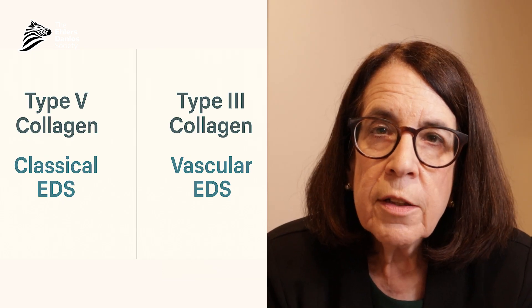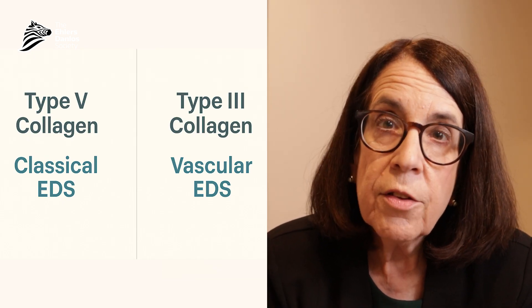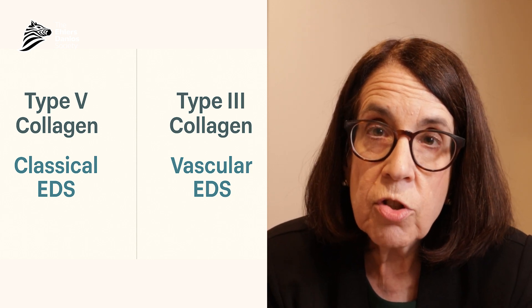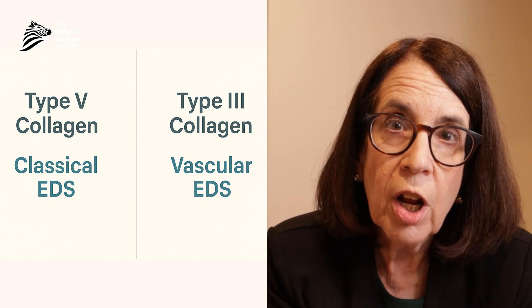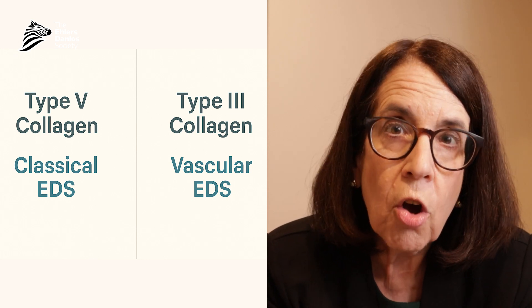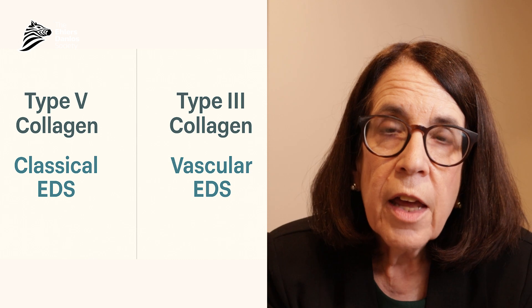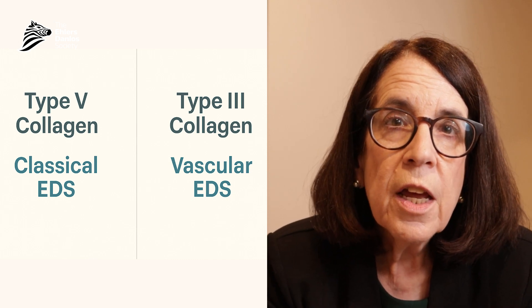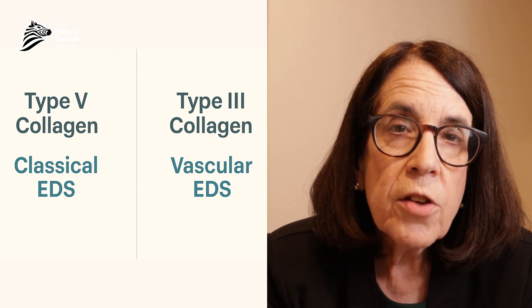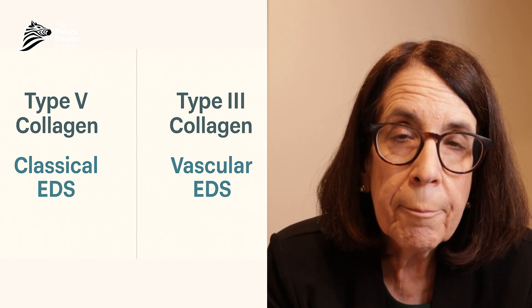Collagen type 5 is known to underlie the classical type of Ehlers-Danlos syndrome — pathogenic variants in the type 5 collagen genes cause classical EDS — and pathogenic variants in type 3 collagen cause the vascular type of Ehlers-Danlos syndrome. This has been a brief summary of connective tissue and collagen.